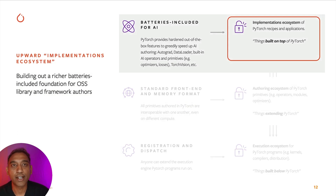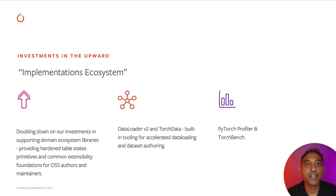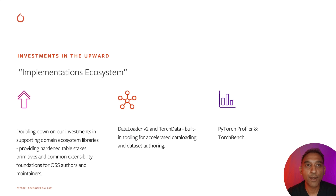On batteries included for AI, which is basically about investing in the upward ecosystem, we want to blow this up by building out richer batteries-included foundations for open-source library and framework authors. We are doubling down on our investments in supporting domain ecosystem libraries, providing hardened table-stakes primitives, and common extensibility foundations for open-source authors and maintainers. With Data Loader V2 and Torch Data, we want to provide performant data loading and dataset authoring out of the box. With the new PyTorch Profiler and Torch Bench, we are providing out-of-the-box better debugging and performance measurement experience.